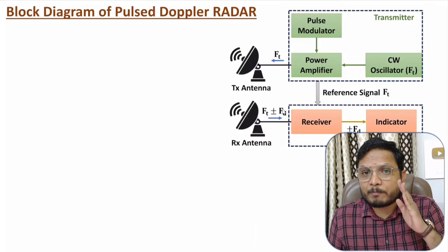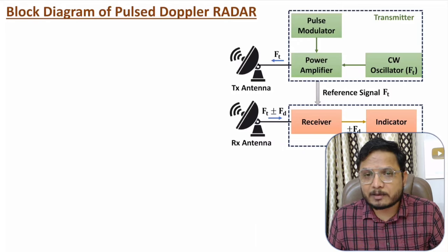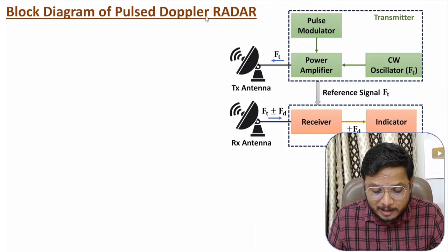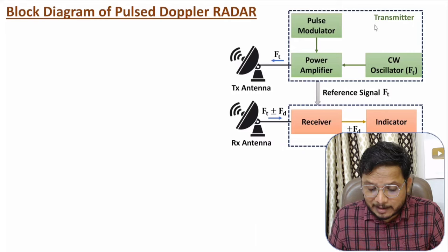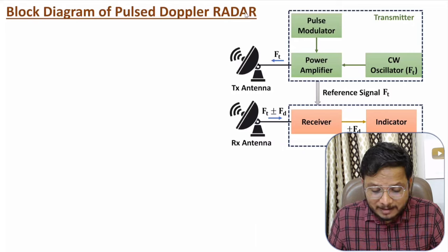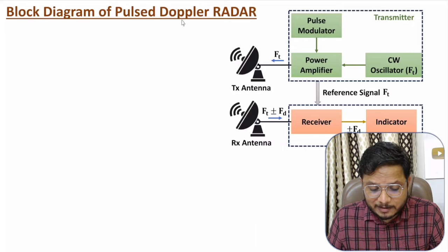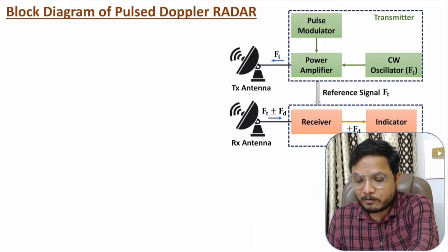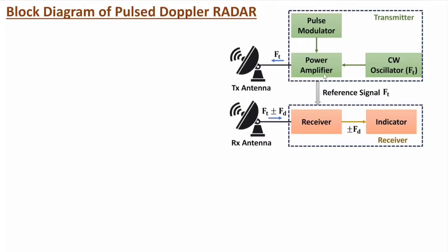In the Pulsed Doppler Radar system, from the name itself, it is a combination of pulsed radar system as well as Doppler radar system. The transmitter circuit is as per pulsed radar system, while the receiver is as per Doppler radar system — or you can say CW radar system. Let us understand the working of this radar system.